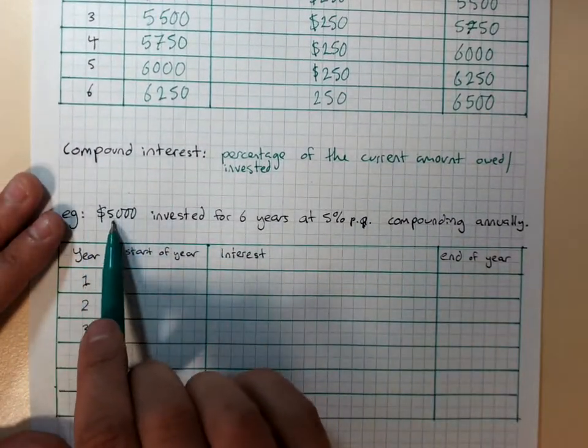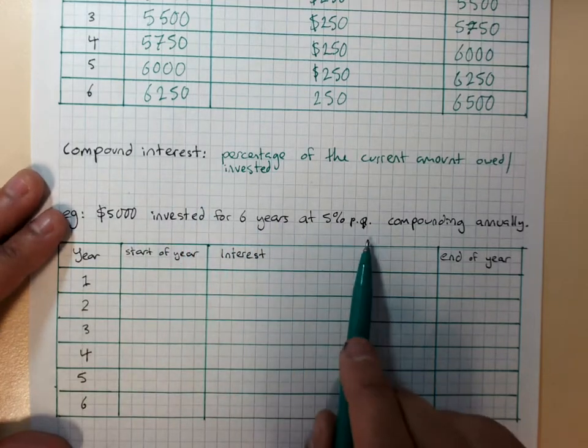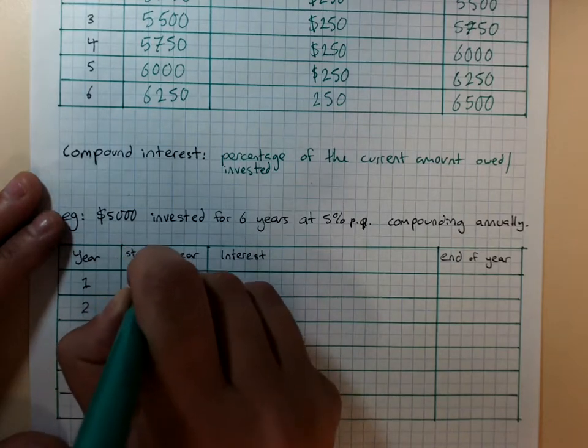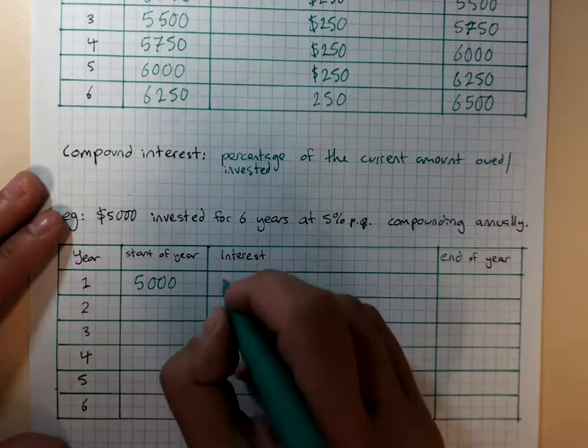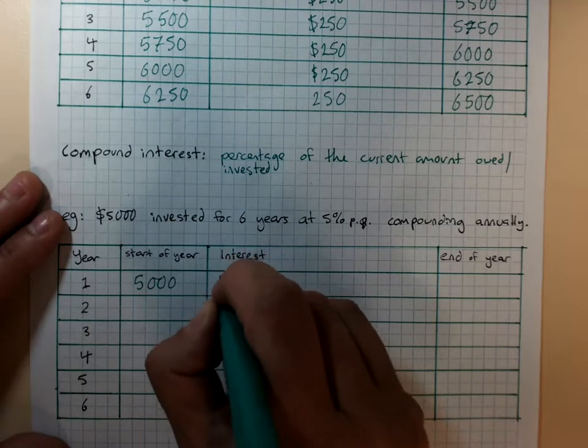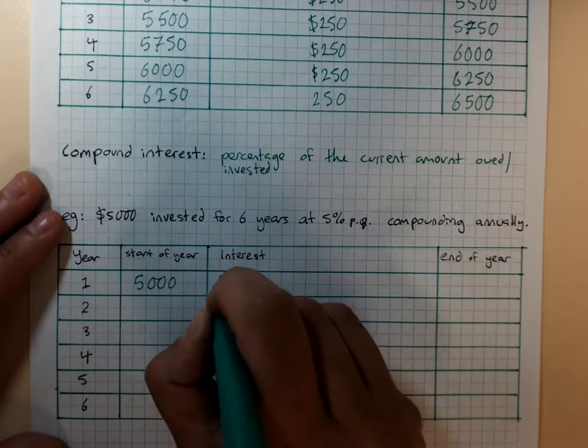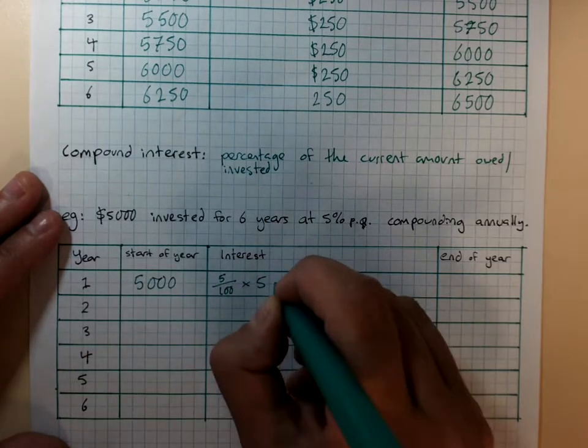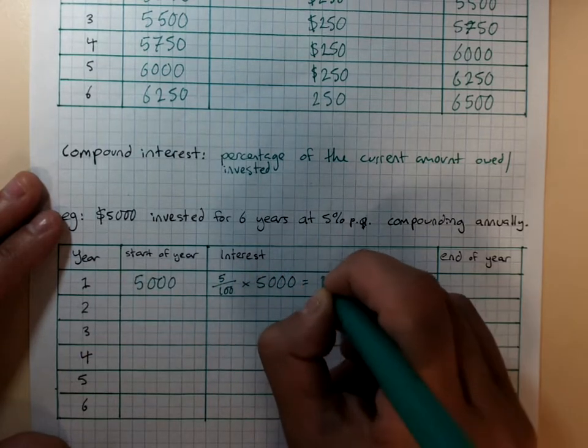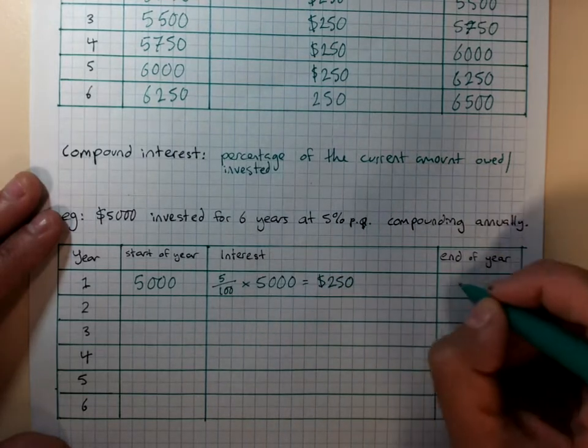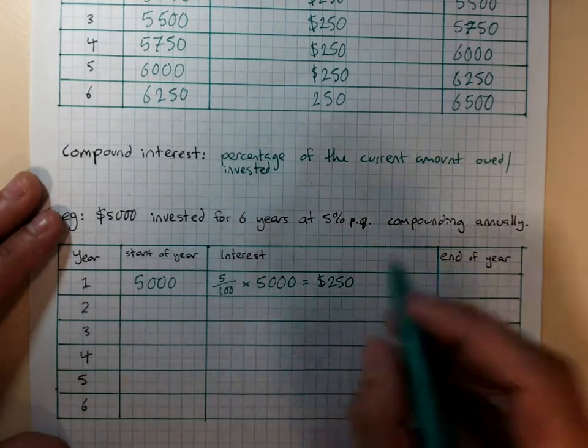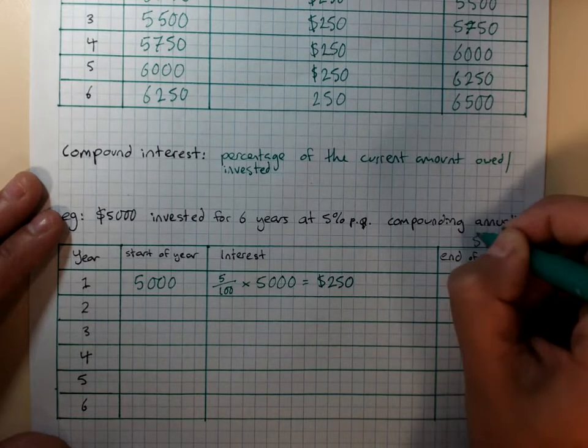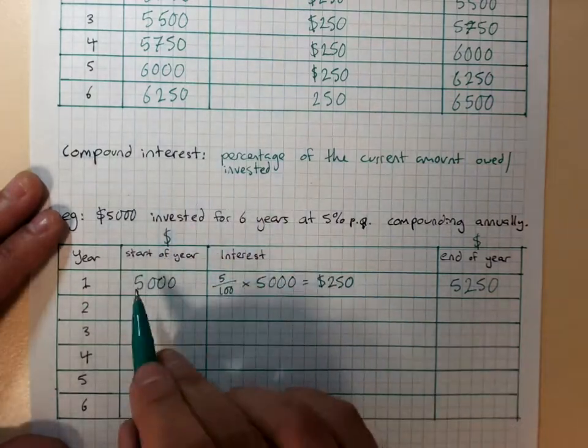I'm still investing $5,000 for six years at 5% per annum, but it's compounding annually. At the start of year one, I've got $5,000 in the bank. Over that year, I earned 5%, 5 over 100, times how much is in the bank. And I know that one, it's $250. At the end of the year, I've got $5,000 plus $250, I'll put dollar signs up here so I don't need to keep writing dollars in front of each of these.